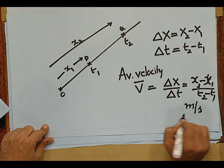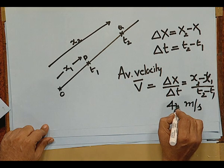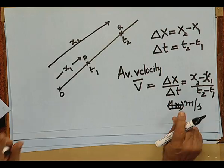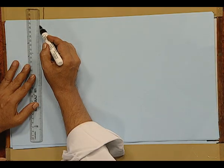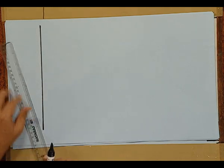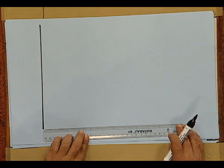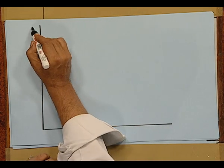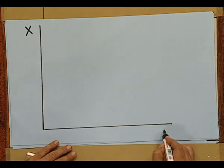The unit of average velocity is simply meter per second in SI units. For example, when we say an object is having 4 meters per second as its velocity, what we mean is in every second interval of time, the displacement is 4 meters. Let us represent the motion of this object as a position-time graph — how position varies with time. This is the x position versus time graph.